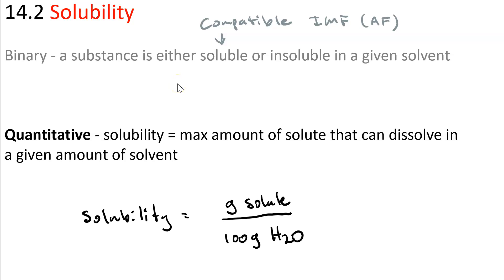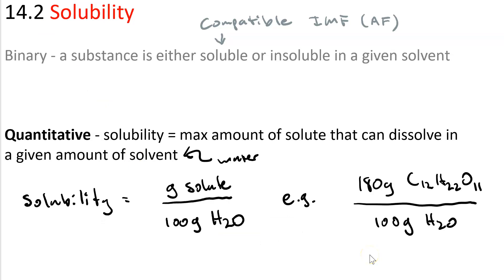When we're talking about aqueous solutions, where the solvent is water, solubility is often expressed in grams of solute over 100 grams of water. For example, sucrose, the sugar that you find in those little white packets on the tables in restaurants. That is sucrose.